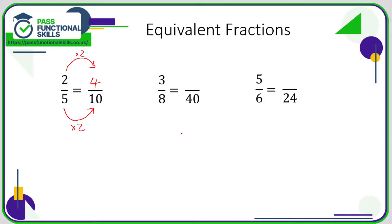Let's have a look at three eighths converted into fortieths. What do you do to turn an eight into a forty? You multiply by five. So we need to multiply the top by five as well — three times five is fifteen. So three eighths equals fifteen fortieths.